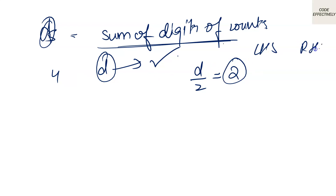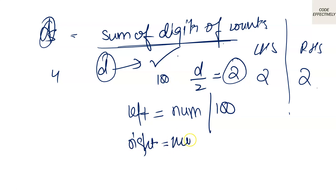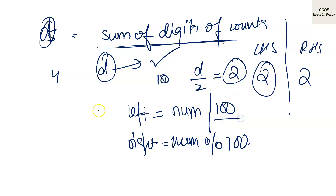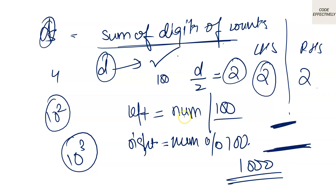We partition the number from the center, so 2 digits go to the left-hand side and 2 digits to the right-hand side. To get the left-hand side, we divide the original number by 10 raised to the power of k (here 10^2 = 100). For the right-hand side, we use num modulus 100. In general, if we want k digits on the left, we divide by 10^k.